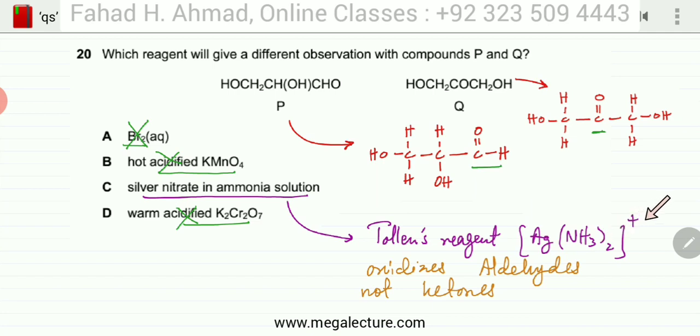That's known as Tollens reagent and this reagent is used to oxidize aldehydes but it's not going to oxidize ketones. So it's going to give a positive result with an aldehyde but no positive result with a ketone. So option C is going to be your correct option for this question.